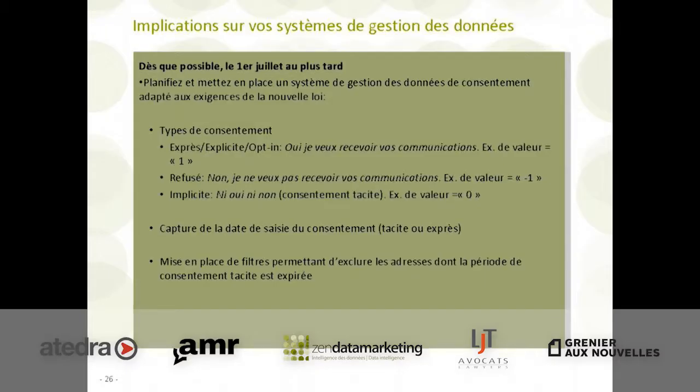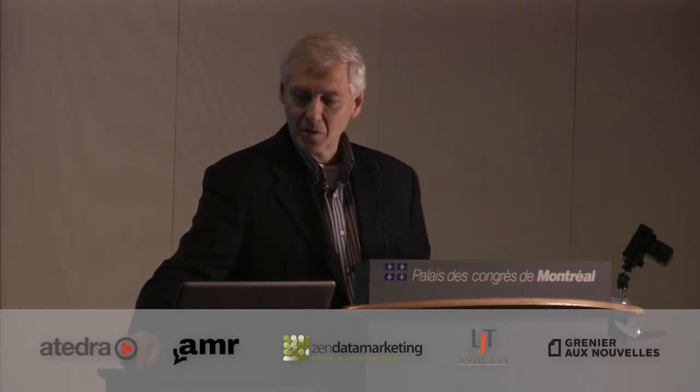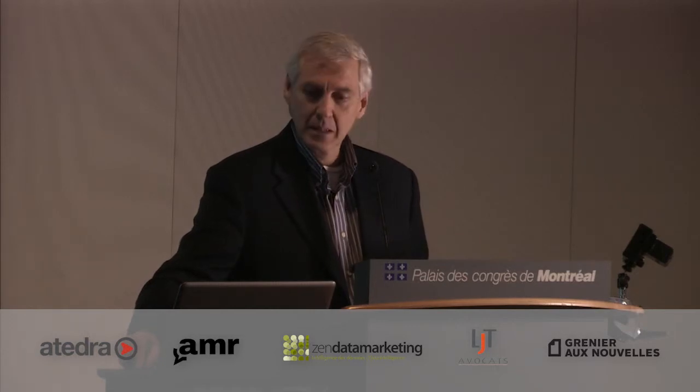La mise en place de filtres permettant d'exclure les adresses dont la période de consentement tacite est expirée est nécessaire. Parce que l'expiration tacite — on va le voir dans la ligne du temps — on n'a pas à vérifier à chaque semaine ou à chaque mois quand est-ce qu'un consentement se termine. Ça doit tout être automatisé.